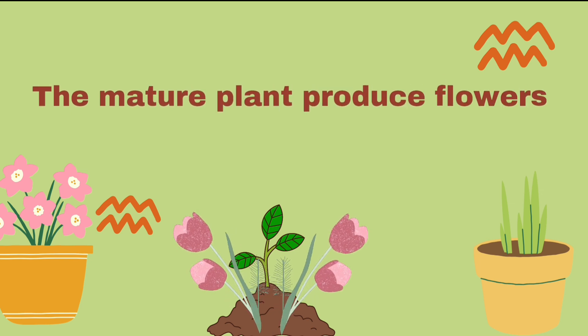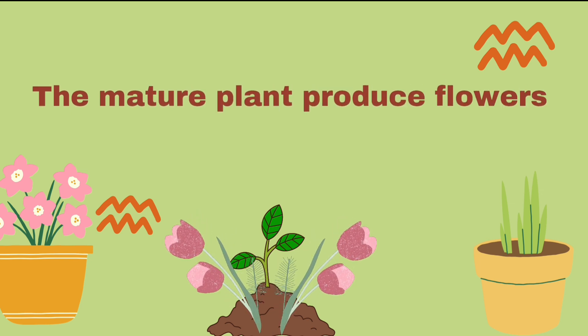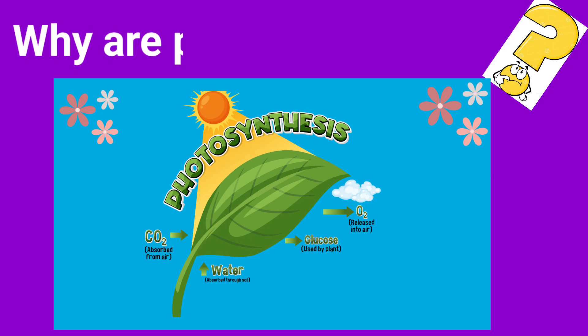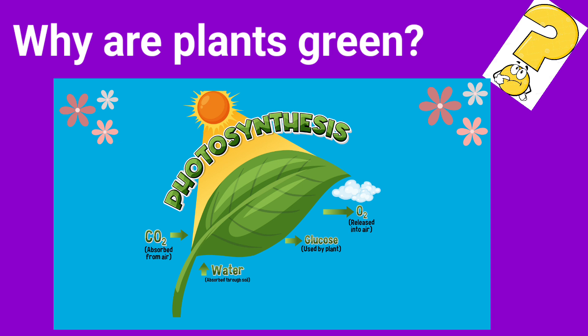Mature plants produce flowers. Do you know why plants are green in color? Because plants are full of a light-absorbing chemical called chlorophyll. Chlorophyll captures the sunlight to make sugar during the process called photosynthesis.